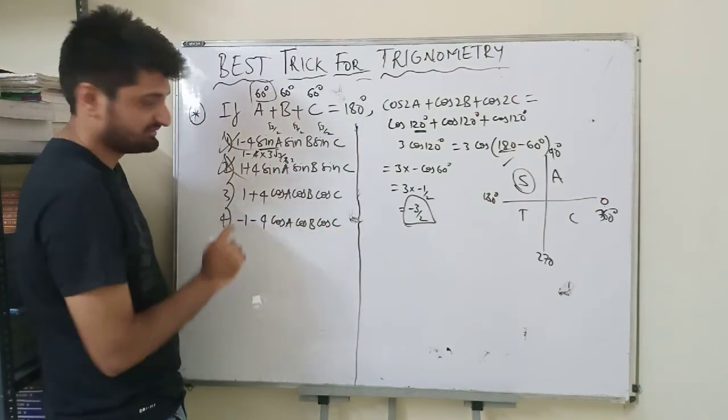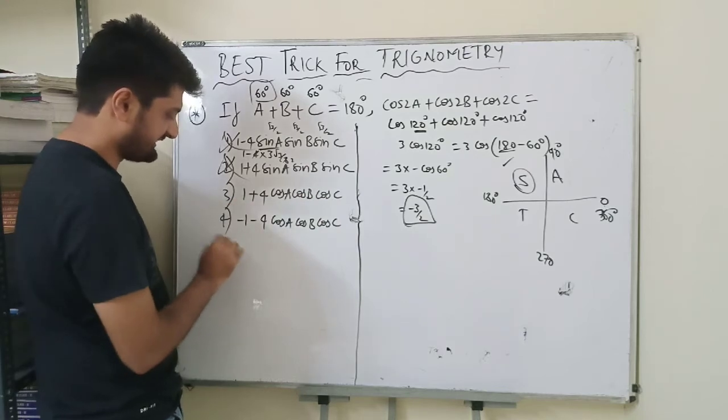Now the next option is 1 plus 4 cos a cos b cos c. So the third option I can write it as 1 plus 4 into...